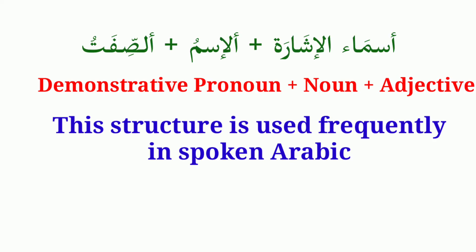Assalamu alaikum, ahlan wa sahlan wa marhaban bikum. In this lesson we are going to learn another structure: asmaul ishara — al-ismu asifatu — demonstrative pronoun plus noun plus adjective. This is the second part. This structure is used frequently in spoken Arabic.